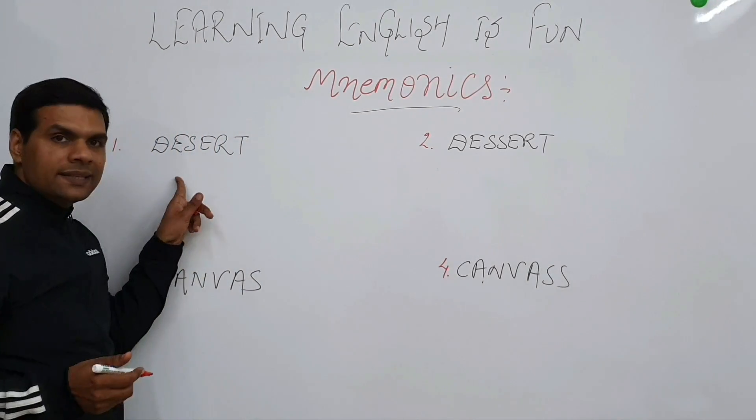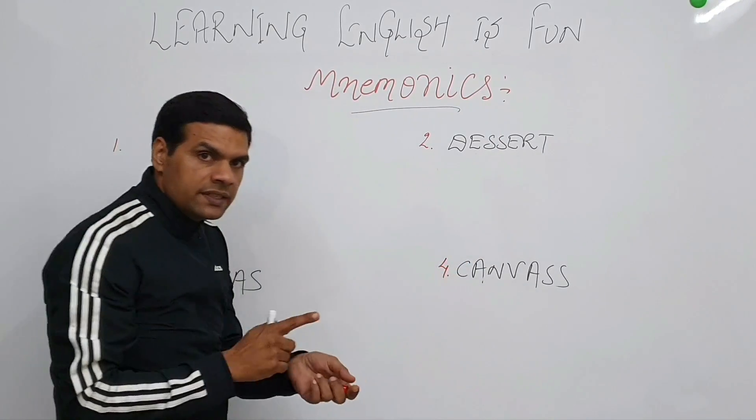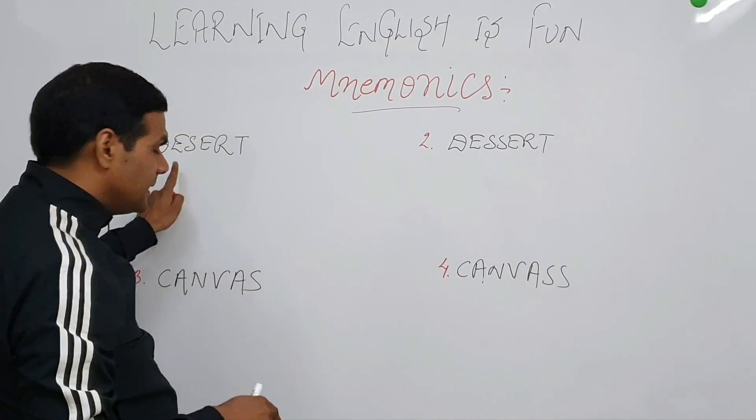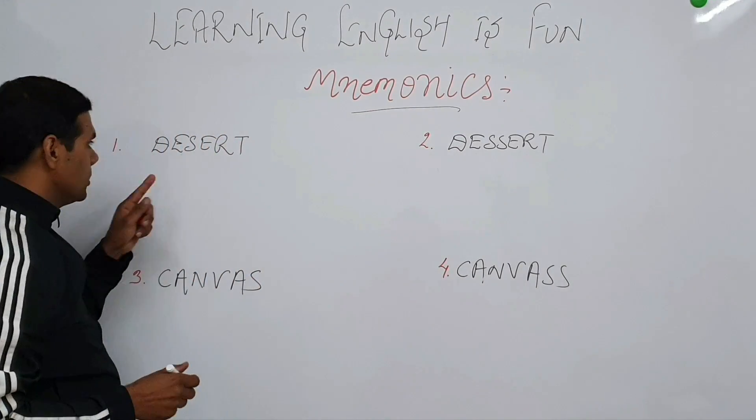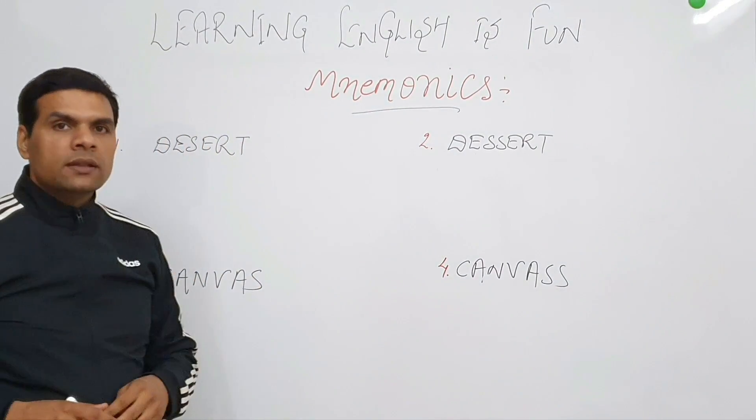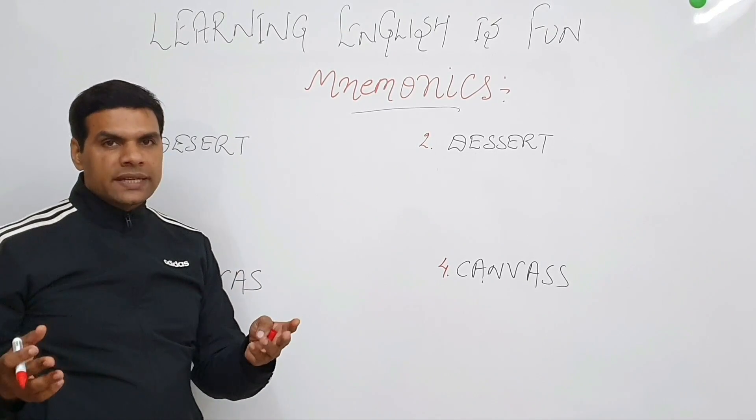What's the meaning of this desert? Well we call this desert and this one is dessert. So first difference is in terms of pronunciations: desert and dessert. Now what's the meaning of this one? Well, a dry land with lots of sand.